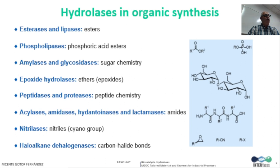Phospholipases for phosphoric acid ester hydrolysis. Amylases and glycosidases extensively used in sugar chemistry. Epoxide hydrolases able to hydrolyze epoxides forming diols. Peptidases and proteases for amine and peptide hydrolysis. Acylases, amidases, hydantoinases, and lactamases to hydrolyze specific amide bonds. Nitrilases used for the conversion of nitriles into carboxylic acids, and analogously, halogenases applied in the addition of water to carbon–halide bonds.